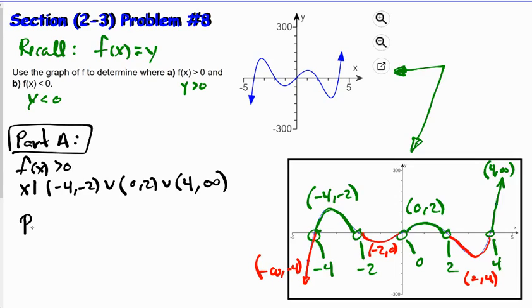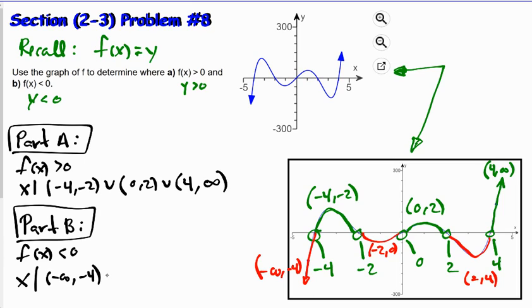For part b, we can say that f(x) is less than 0 for x values such that x is in the interval negative infinity to negative 4, unioned with negative 2 to 0, unioned with 2 to 4.